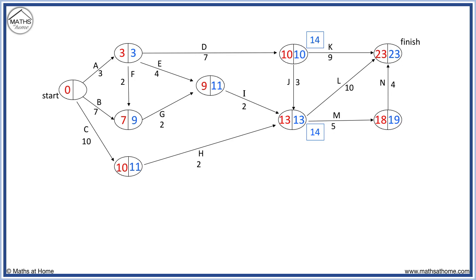11 minus 4 equals 7, and 9 minus 2 equals 7. Here, 3 minus 3 equals 0, which we can also write in because we know the starting node must contain two zeros. 9 minus 7 equals 2 and 11 minus 10 equals 1.